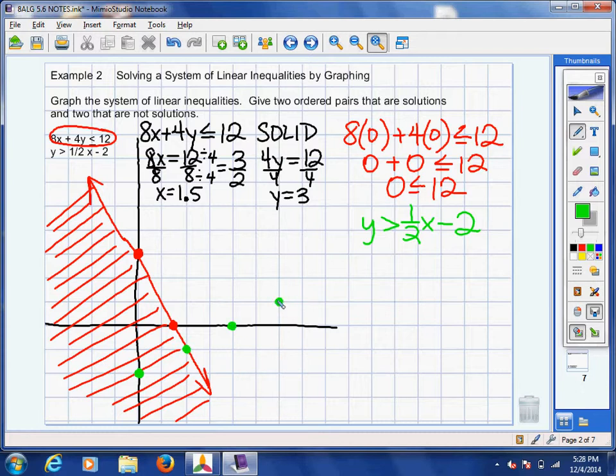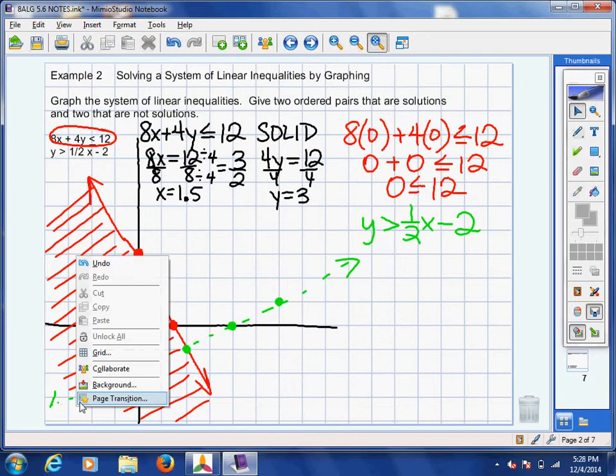Or I could have gone down one, left two. I could have done that too. And then remember there's no equal to sign, so dash this line. There it goes. So now I got to figure out which side to shade. That's what I got to figure out right now. That's the most impending thing.